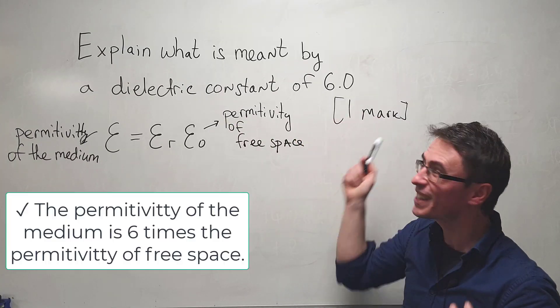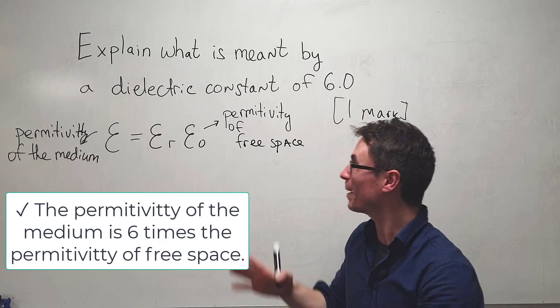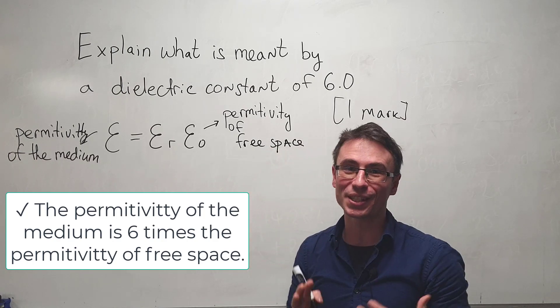So having a dielectric constant of six would mean that the permittivity of the medium is six times the permittivity of free space.